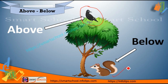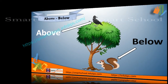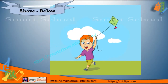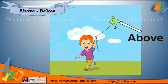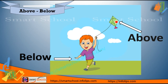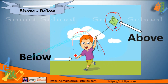Now you understand. Let's see next one. Tell me who is above and who is below in this picture. Kite is above and boy is below. Yes, this kite is above in the sky and this boy is below.